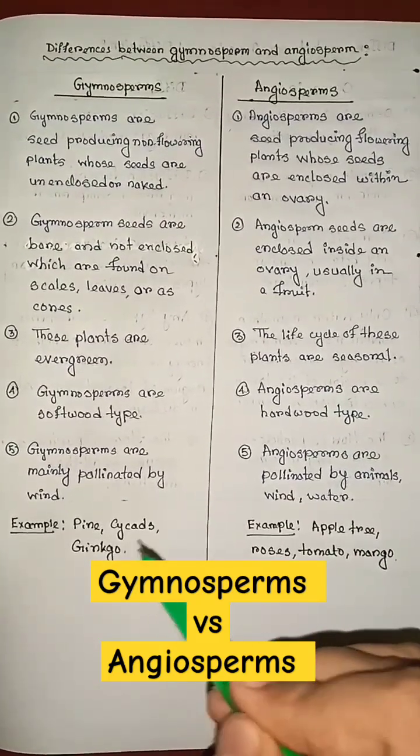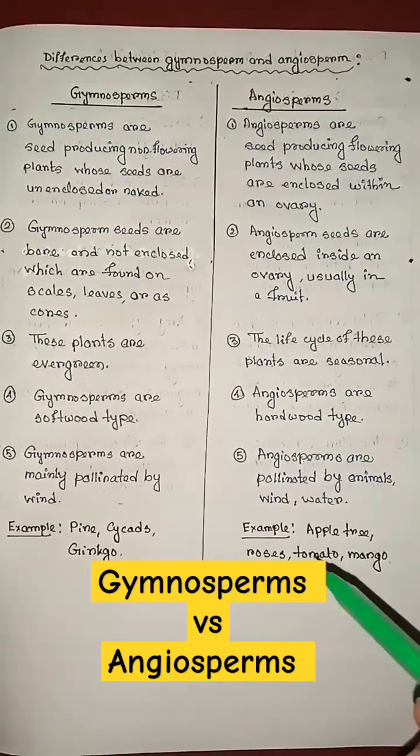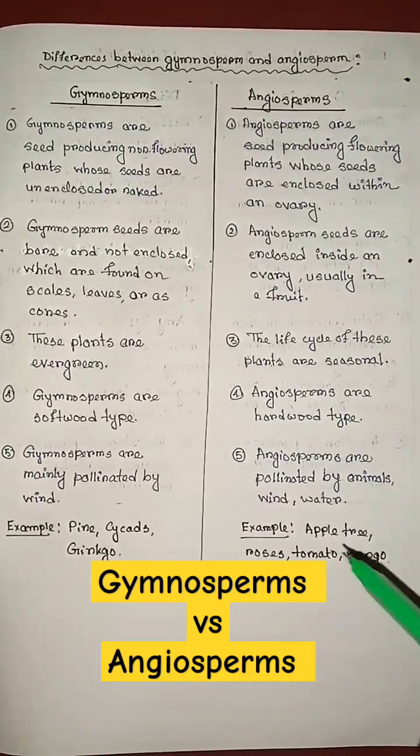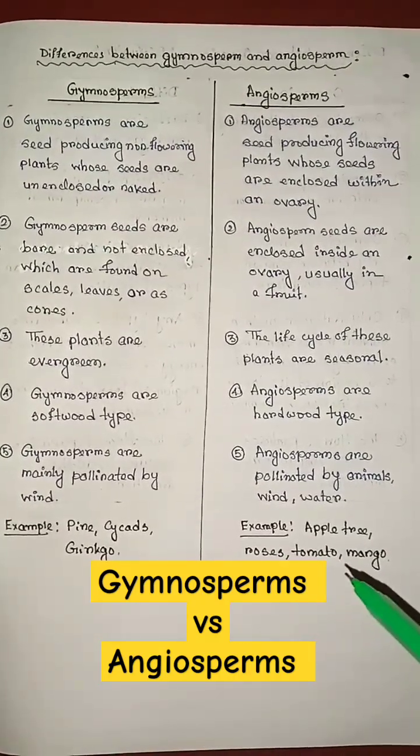Examples of gymnosperms: pine, cycads, ginkgo. Examples of angiosperms: apple, roses, tomato, mango.